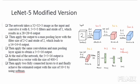At the end of the network, the 5x5x16 output is flattened to a vector of size 400x1. Two fully connected layers are then applied, and finally the estimate output of size 10x1 is achieved using the softmax function.